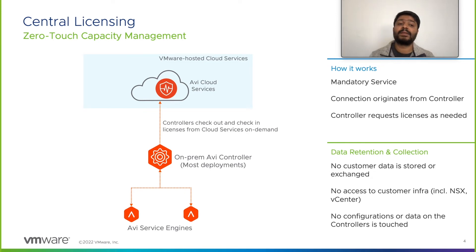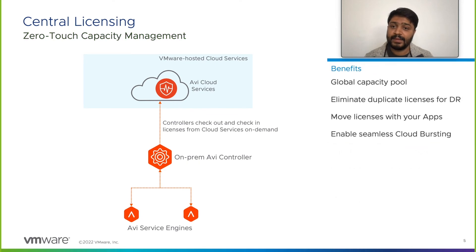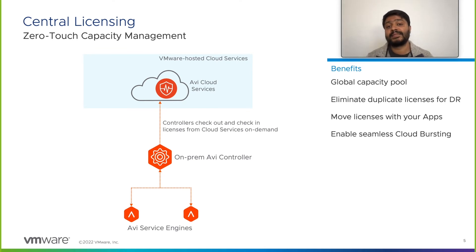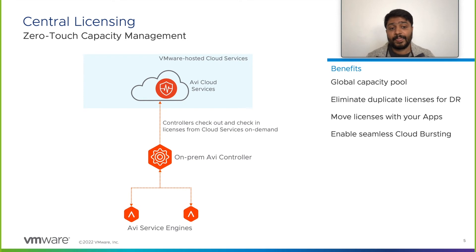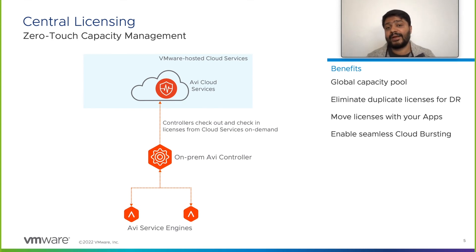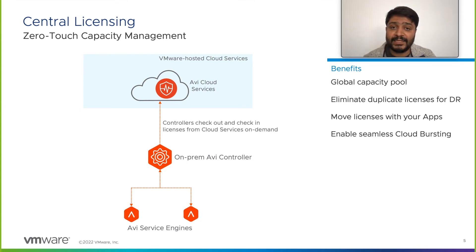The benefits of central licensing are manifold. It enables a global capacity pool where disparate, distributed controller deployments can connect to central licensing and have fungible, elastic capacity management provided in a zero-touch, completely automated way. It eliminates the need for duplicate licenses to service use cases such as disaster recovery. It enables cloud bursting where, as applications grow and move between environments, the operational model for licensing and managing capacity remains the same with zero intervention from operations teams.